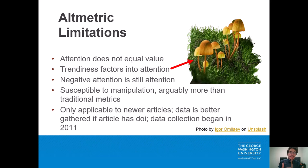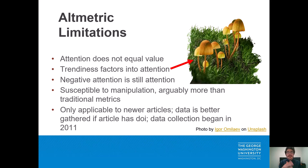Negative attention is still attention — a panned article might have significantly more attention than a non-panned article, so it would be up to the researcher to differentiate how an article has been used, not just the fact that it's been read a lot. It's also been argued that altmetrics are more susceptible to manipulation than traditional metrics; page views would be a lot easier to manipulate than citation count. And altmetrics has the opposite age-related problem as traditional metrics: altmetrics started to accumulate in 2011, so some really old articles might not have any information at all. Altmetrics also works best on pages that have a DOI, so some pages might not even have altmetrics.